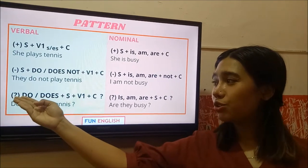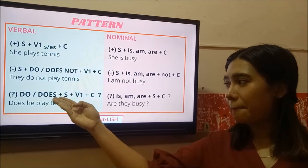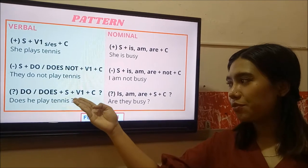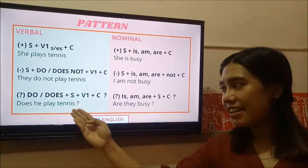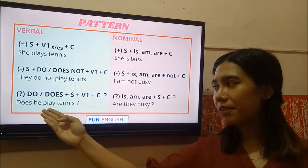And then, the interrogative. Do or does plus subject plus verb 1 plus object as complement. Does he play tennis? Do they play tennis?